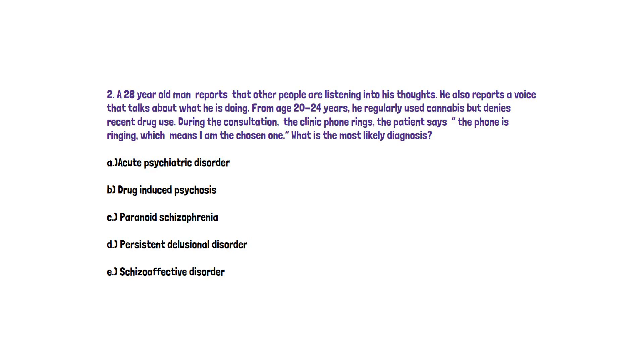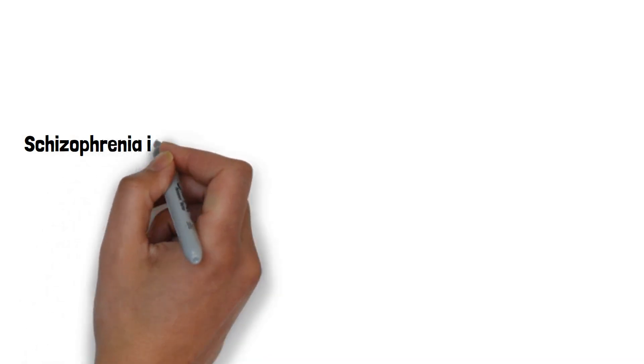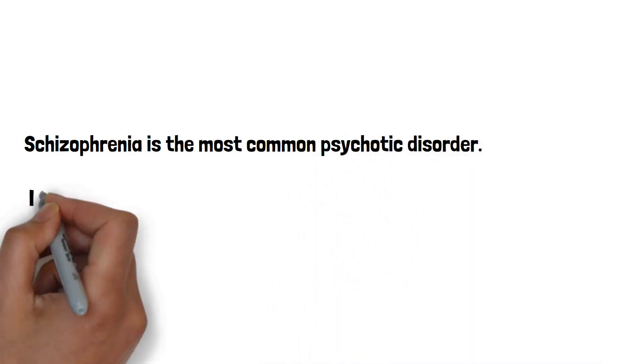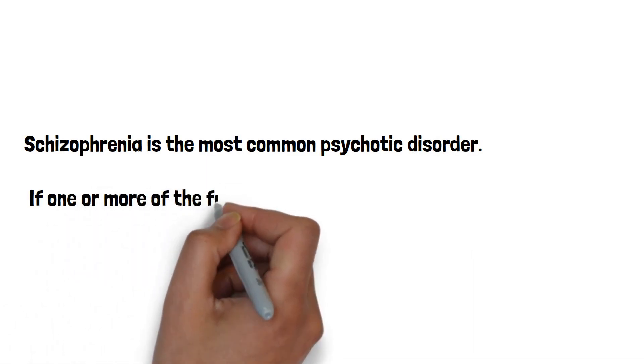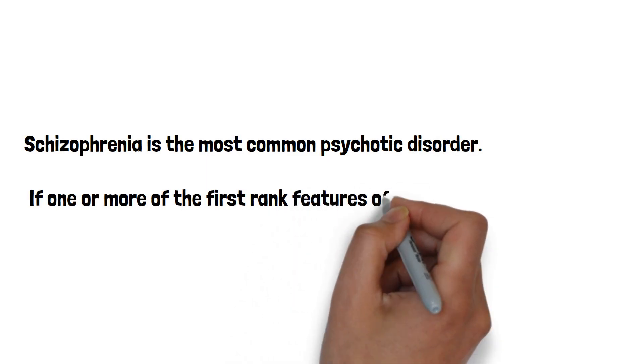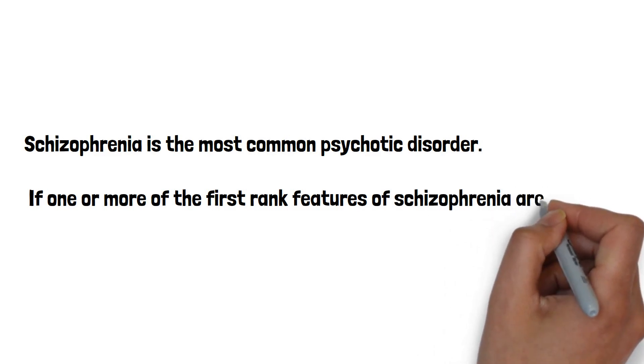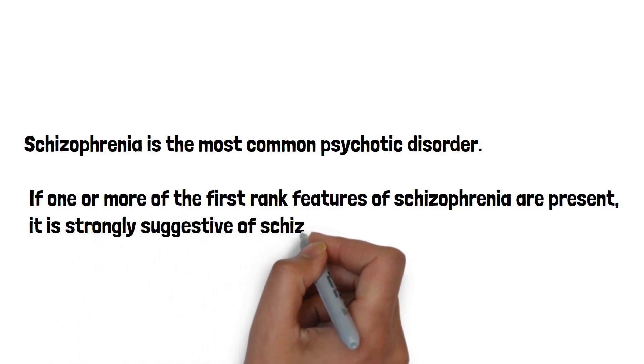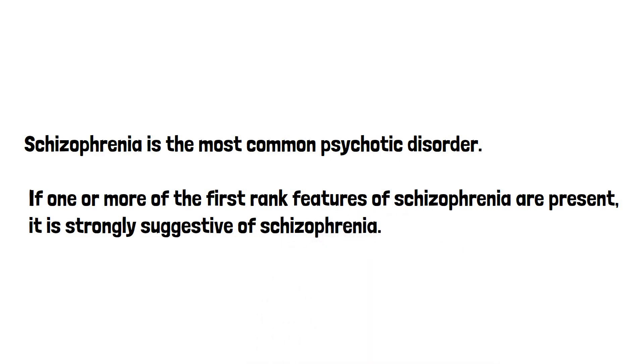So the answer here is C. This patient has paranoid schizophrenia. This is a really common question and most students will be able to recognize that the patient is psychotic but may have difficulty in the exam identifying what is the psychotic disorder. So I think this is a really useful question to include. So let's go through schizophrenia. It is the most common psychotic disorder and we can identify schizophrenia by looking for first rank symptoms or features. These are strongly suggestive of schizophrenia.